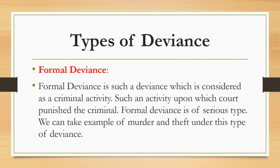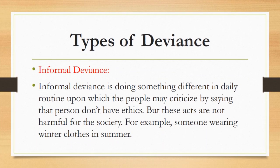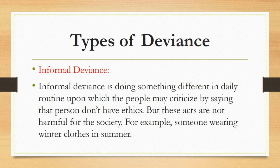The second type is informal deviance. Informal deviance is doing something different in daily routine upon which people may criticize by saying that a person doesn't have ethics, but these acts are not harmful for the society. For example, if someone is moving on the road wearing winter clothes in summer, it will look totally different as all other persons will be wearing summer clothes. Similarly, people living in a village usually go to bed early and wake up before sunrise, so if someone in the village stays awake all night and sleeps in the morning, this act is also against the norms of that village. In both cases, persons are doing something different from others, but their acts are not a serious threat.